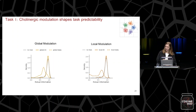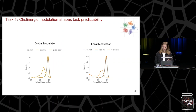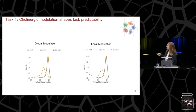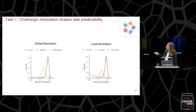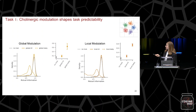We then wanted to know whether these adaptive learning mechanisms make networks more selective to relevant task features. We measured how predictive units were of task variables by computing mutual information. We see that in both global and local modulation cases, the leaky integrator leads to a wider distribution of mutual information values, perhaps suggesting it encodes more diverse solutions to the task, whereas the perfect integrator is similar to a network without any modulation.